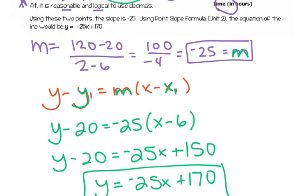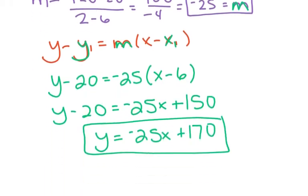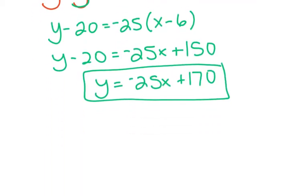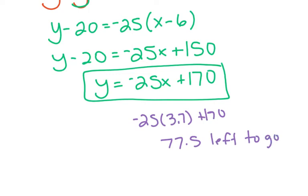Now I have the equation that best fits this line. If a bicyclist had been biking for 3.7 hours, how far would they have left? You'd do negative 25 times 3.7 plus 170, giving 77.5 miles left. This also tells us that when the bicyclists started, they had 170 miles to go. Think about what part of the equation tells us how many miles they traveled per hour — pause the video and think about which number tells us how fast they're going.